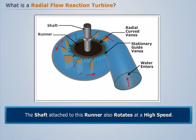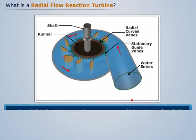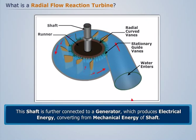As a result, the shaft attached to this runner also rotates at a high speed. This shaft is further connected to a generator, which produces electrical energy by converting from the mechanical energy of the shaft.